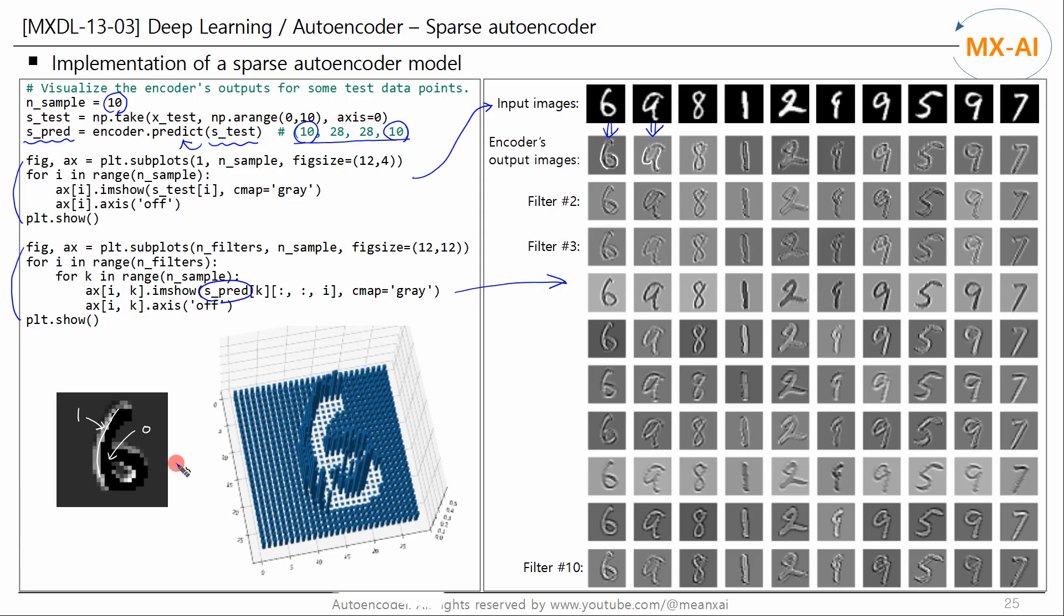If we plot the pixel values of this image as a 3D bar chart, it would look like this. You can see that the pixel values at the edges of the digit image are larger. And the pixel values at the inside are smaller.